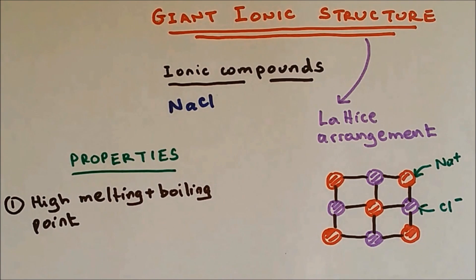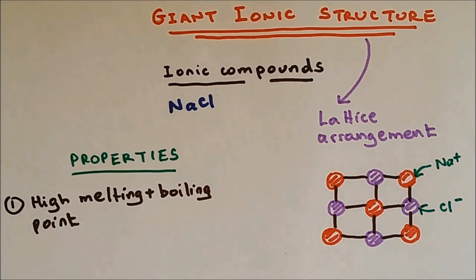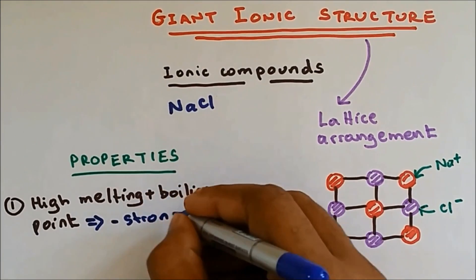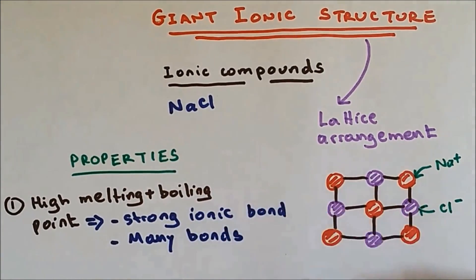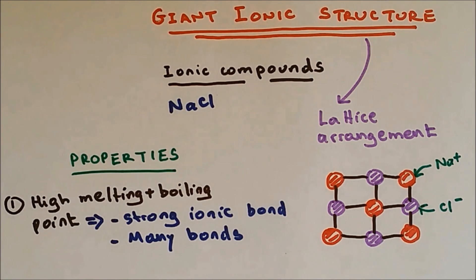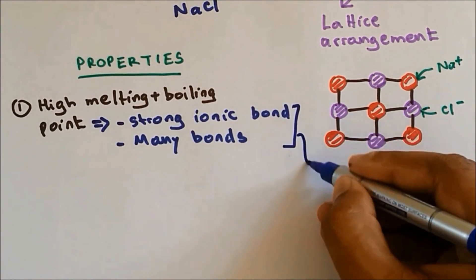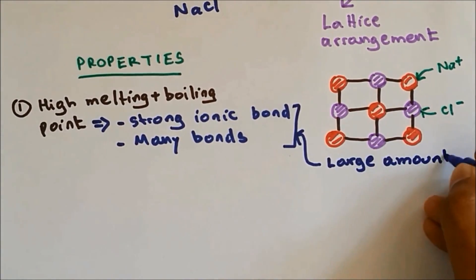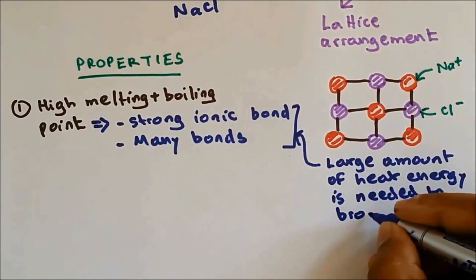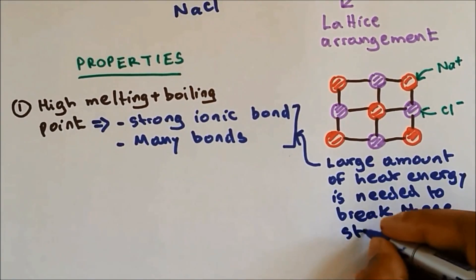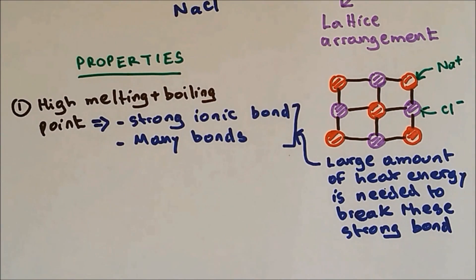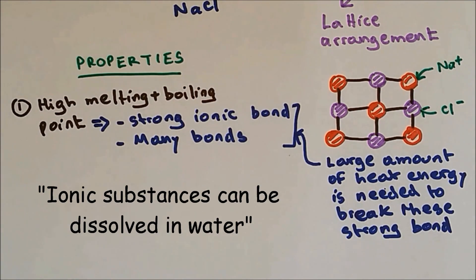The reason why they have a high melting and boiling point is because they have strong ionic bonds, and since it's a giant structure they have many bonds. Because they have many strong bonds, a large amount of heat energy is required to break them.